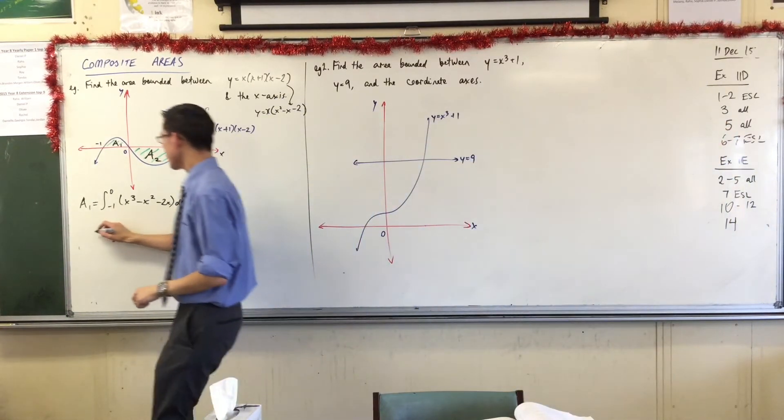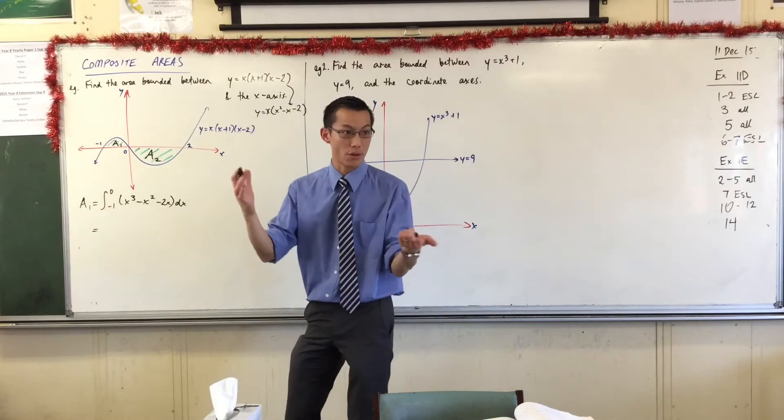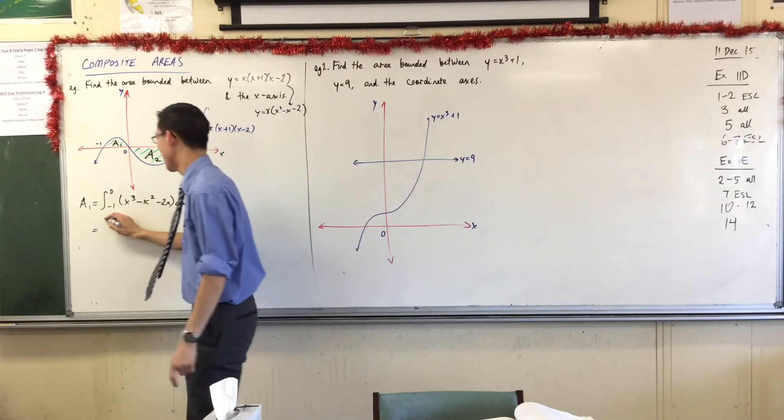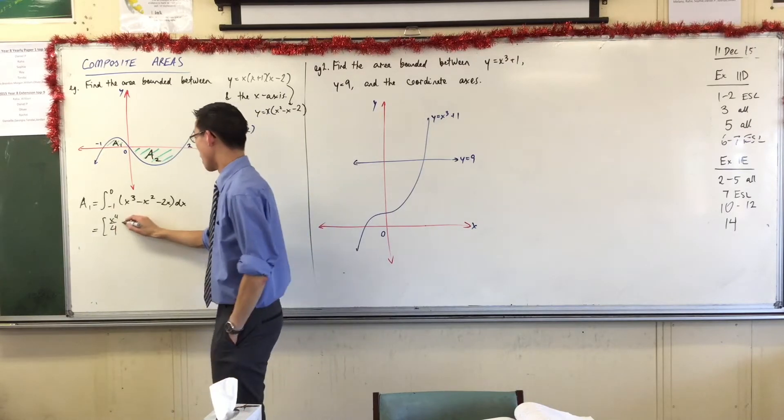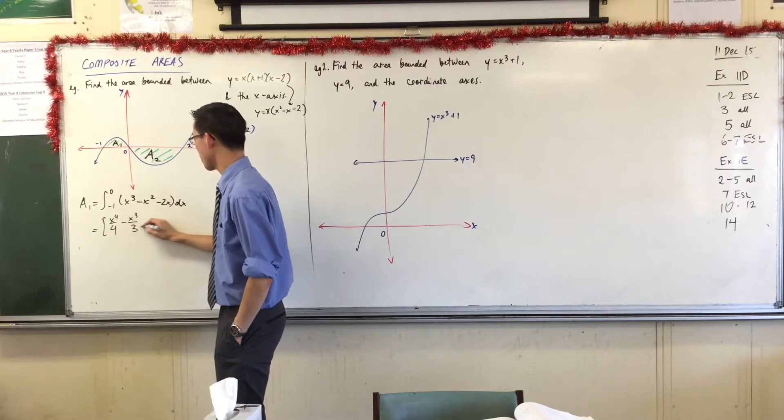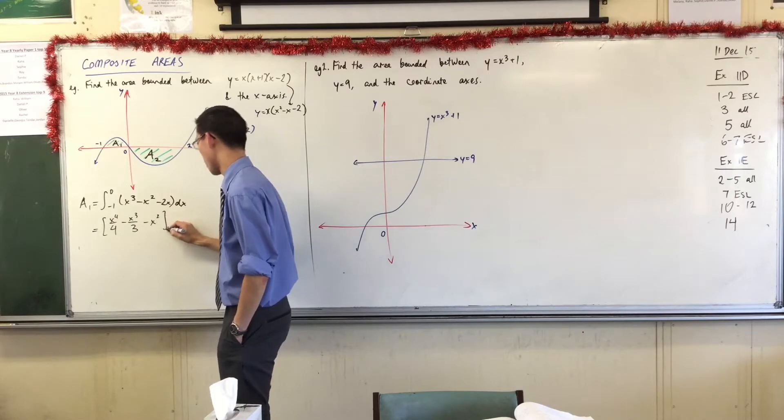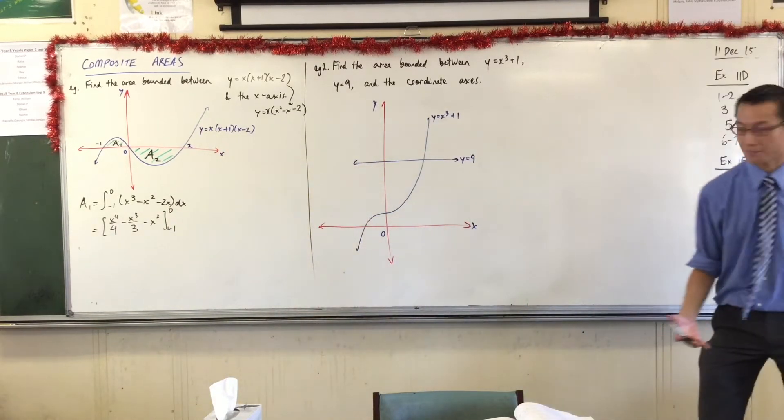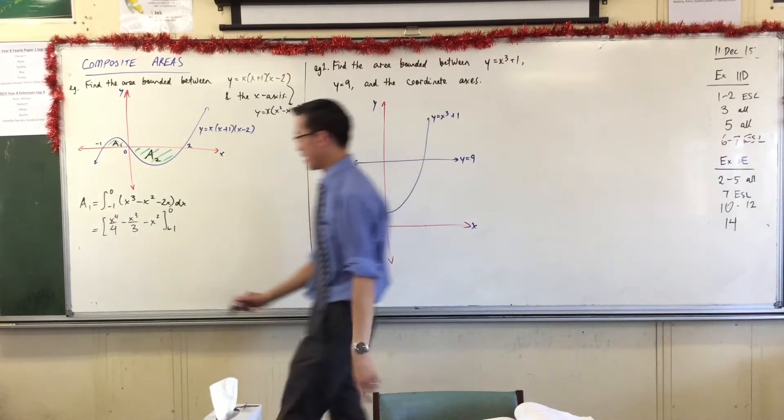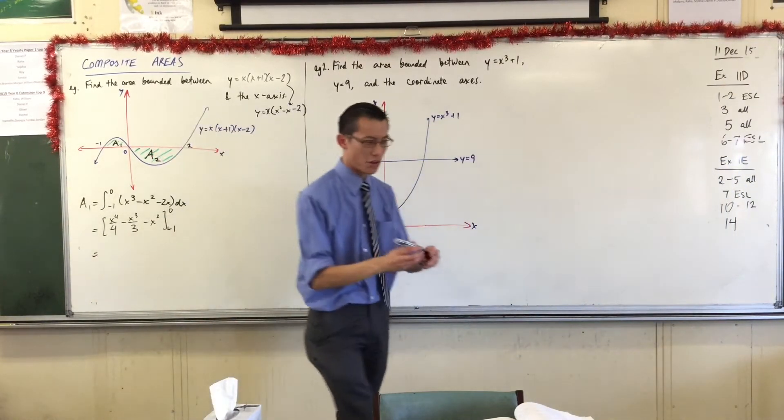So there's the integrand. Now, I would say I'm just going to do the primitive function. So it looks like I'm getting x to the 4 over 4 minus x cubed over 3 minus x squared from negative 1 to 0. Happy so far? Does it look alright?